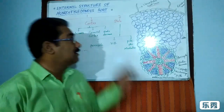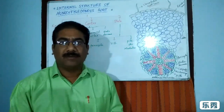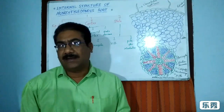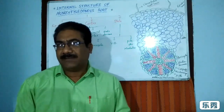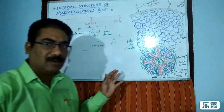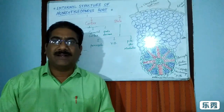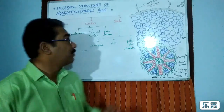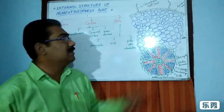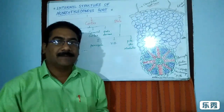Like the dicot root, the monocot root is also differentiated into three important zones: epidermis, cortex, and stele.